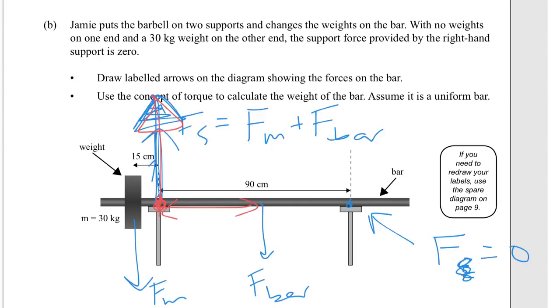The distance here, it's been given, so it's 45 centimetres from vertically there to the centre, half of that 90. So that force of the bar times that distance should be equal to that 15 centimetre distance times the force of the mass, which is 30 times 9.81.